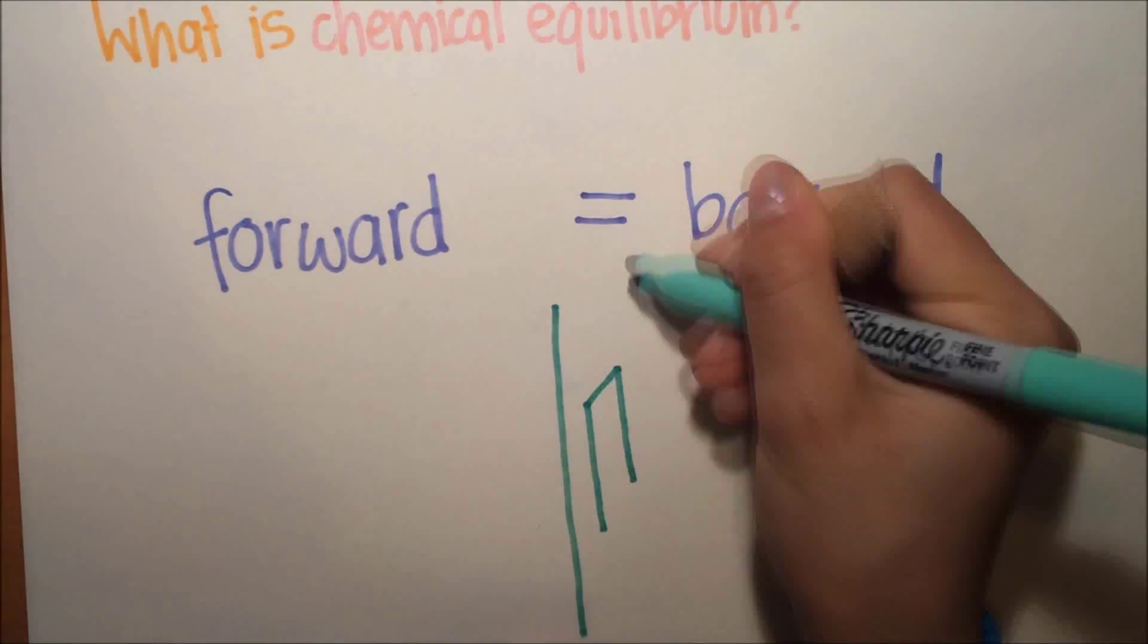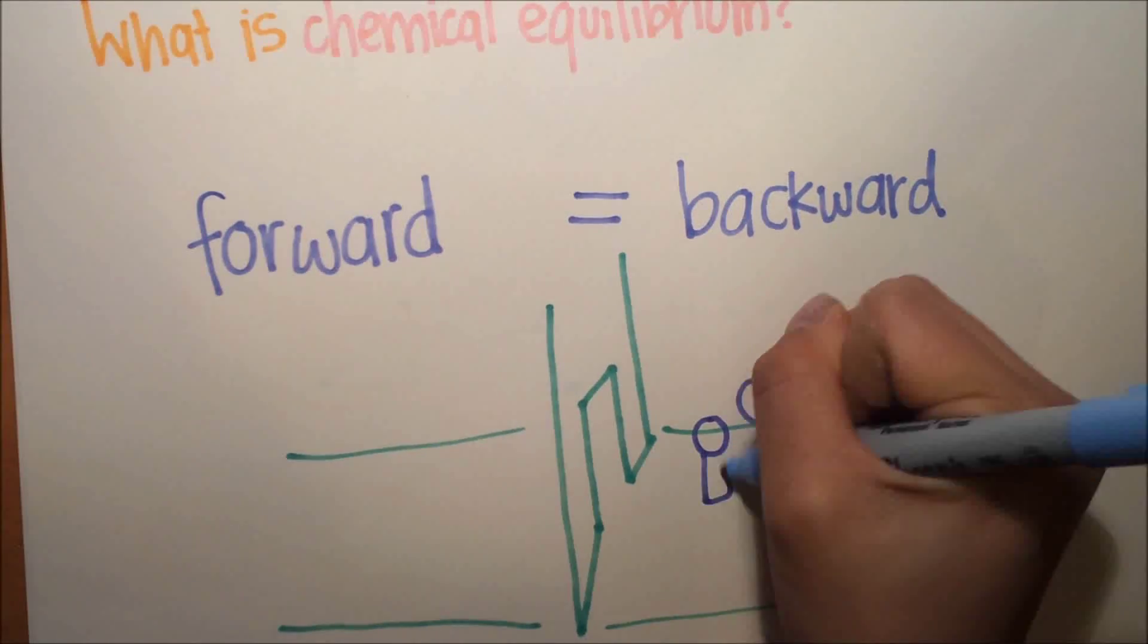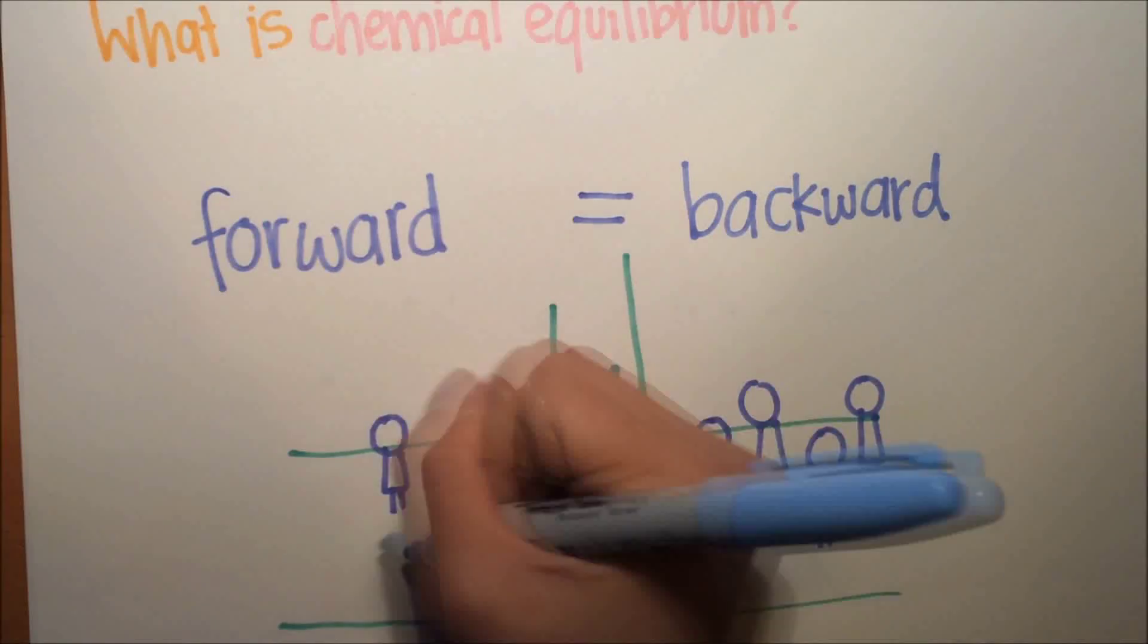To illustrate this, let's pretend we have two rooms, with the left side representing the forward reaction and the right side representing the reverse, and let's say there's five people in the right room and three people in the left room.